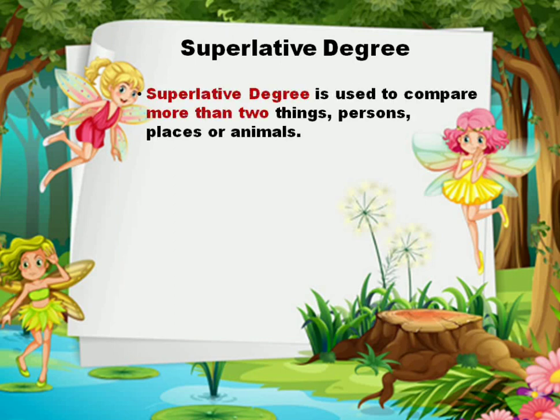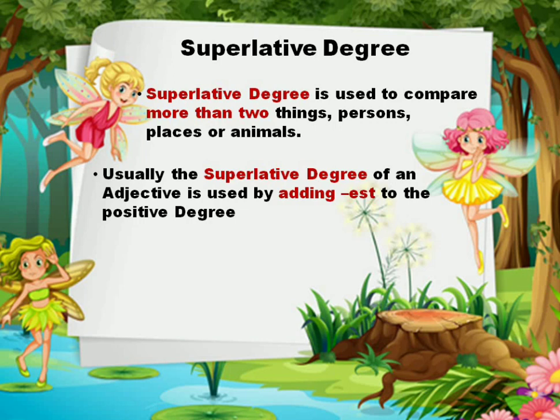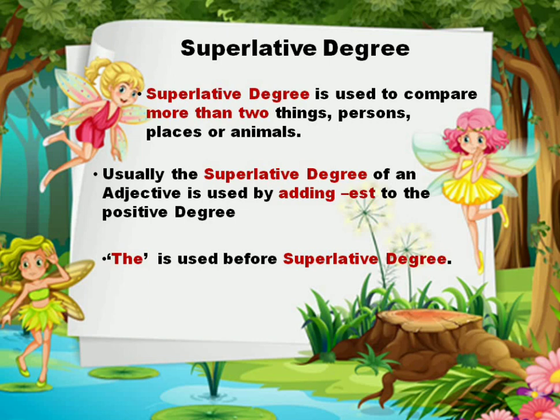Superlative degree is used to compare more than two things, persons, places, or animals — that means comparison among three, four, or more. Usually the superlative degree of an adjective is formed by adding 'est' to the positive degree. The article 'the' is used before superlative degree. Whenever there is a superlative degree, before that we always use the article 'the'. You have already done this in articles as well. Similarly, 'the' is used before every superlative degree.